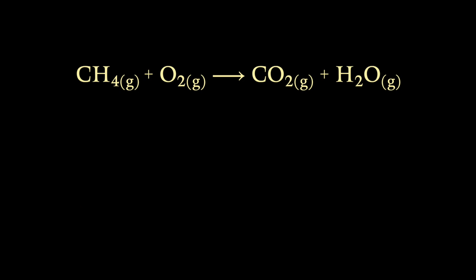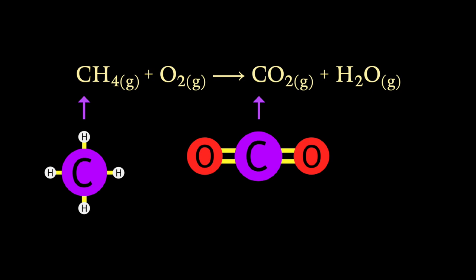Let's see what we can do to balance this equation for the complete combustion of methane. Firstly, we should consider the compounds containing carbon. There is only one such compound on each side: methane on the left, and carbon dioxide on the right. They both contain just one carbon atom, which means the element carbon is already balanced. Great!